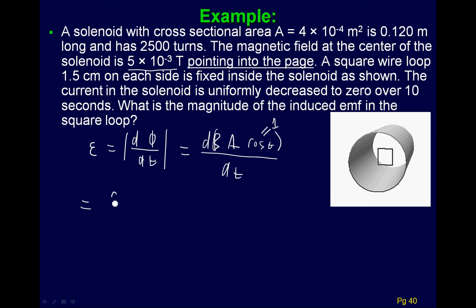What actually changes here is the B field. So we take the derivative of B times A. A stays the same, cosine stays the same, it's 1. And so it's actually dB dt times A.